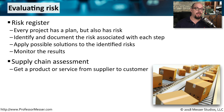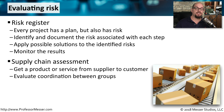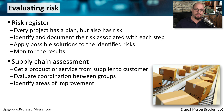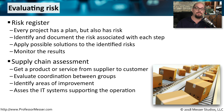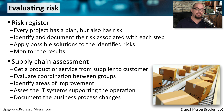We might also need to evaluate risk for something as common as your supply chain. This is the process used to get a product or service from the very beginning supplier to the final product. A supply chain usually involves third parties you have to work with, so there's a set of coordination that must occur between all of these different groups. By examining the supply chain, you can identify areas where it might be improved and look at IT systems to see if optimizations could be put in place, then document what the business process changes might be to make the supply chain more efficient.